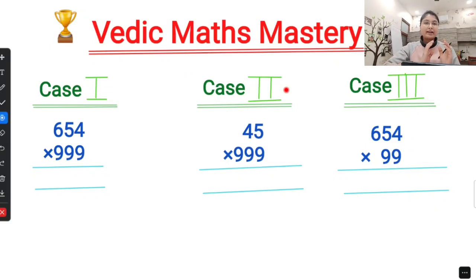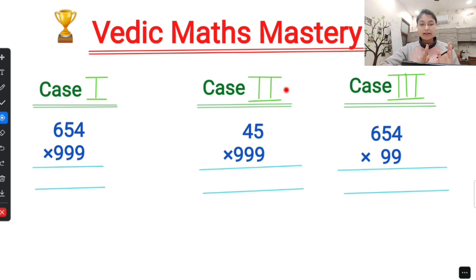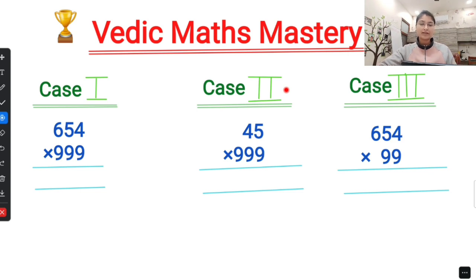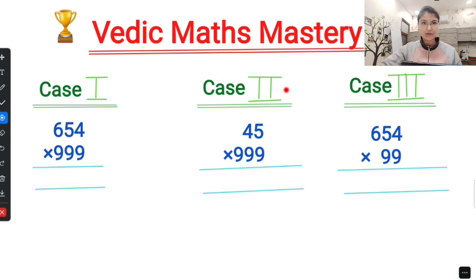Hello students! In today's video we'll learn the series of nines. There are three cases: the first case is equal to nines, the second case has a higher digit with nines, and the third case has a lower digit than nines. We'll see how to get the answer in all three cases in just five seconds.